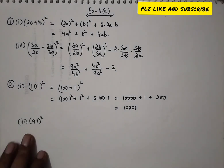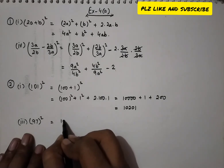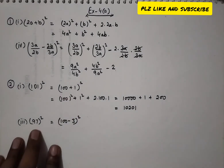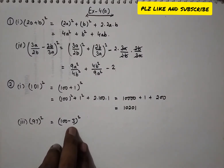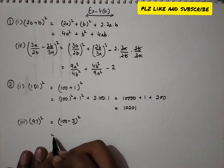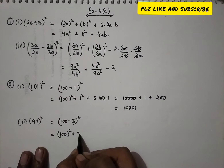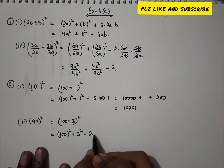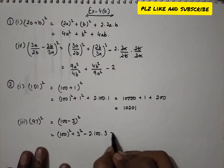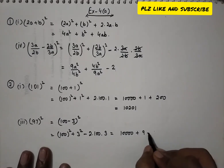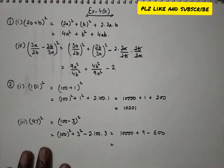The next one is 97². We write 97 as (100 − 3)², choosing 100 because its square and the smaller number 3 are easier to work with. Applying the (a − b)² identity: 100² + 3² − 2 × 100 × 3 = 10,000 + 9 − 600 = 9,409.